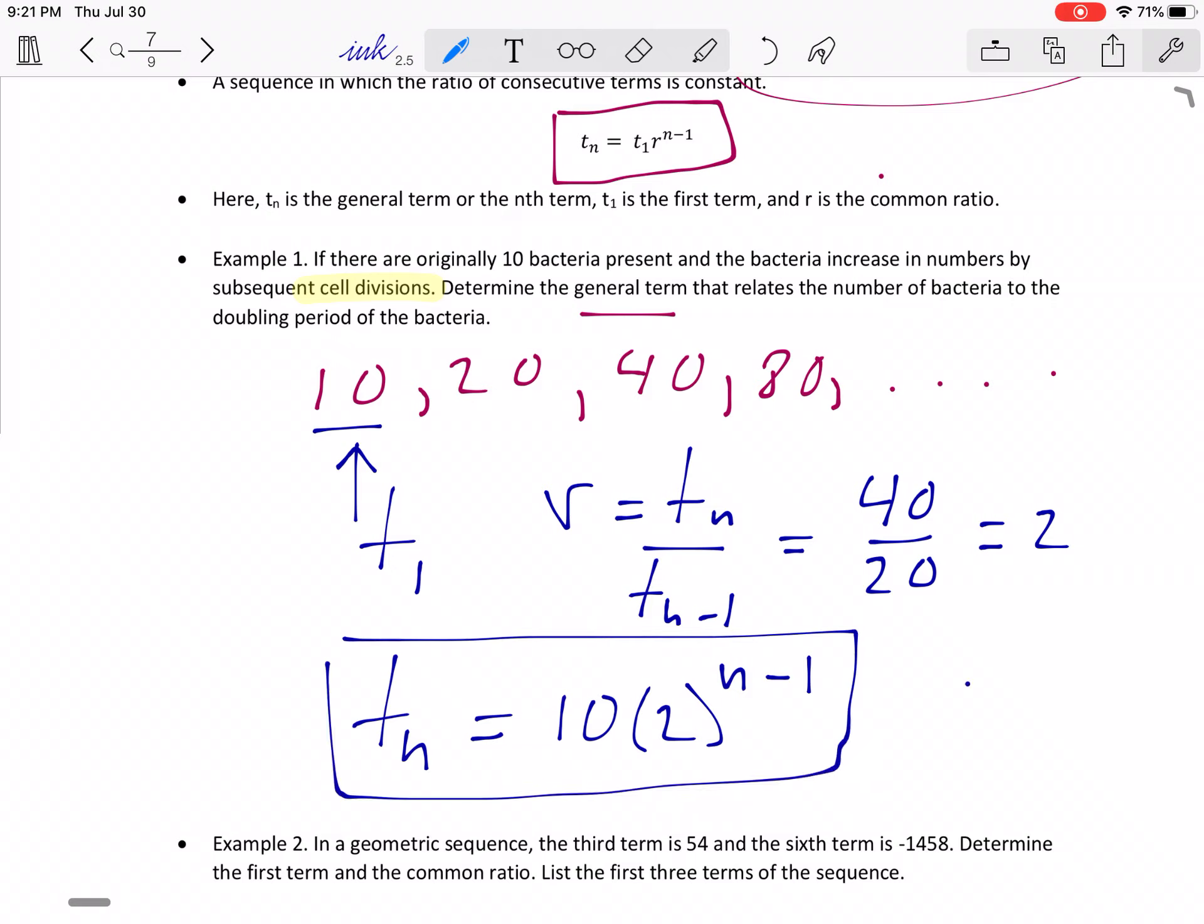So what this allows you to do now is instead of me just writing out the sequence and keep doubling, if I were asked, you know, what's the 100th term going to be, then what I would do is I'd put 100 in for N and then go 100 minus 1 and then 2 to the power of 99, whatever that is, multiply it by 10.